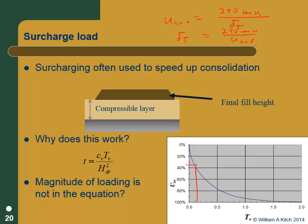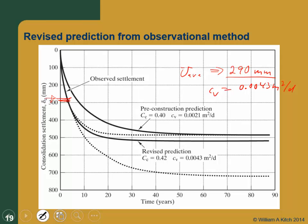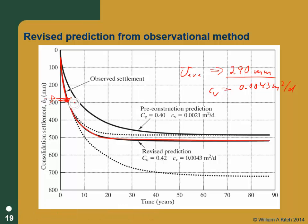To summarize: we calculate C sub C such that the settlement at that point corresponds to the average degree of consolidation at that time. We used the pore pressure data to get the time and C sub V, and now we use the settlement data to back-calculate a C sub C that gives the correct total settlement consistent with the average degree of consolidation. The concept is straightforward even if the numbers are detailed.